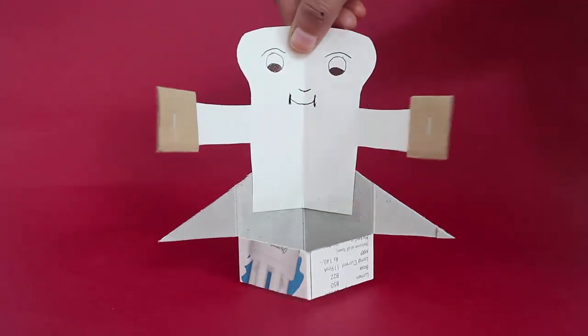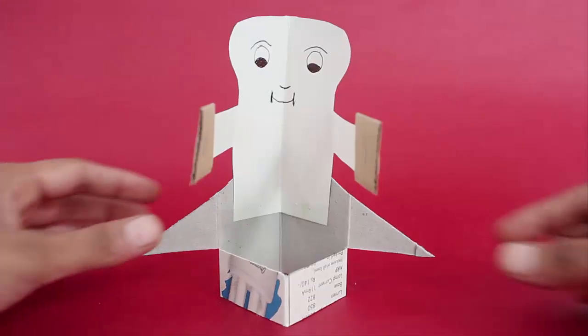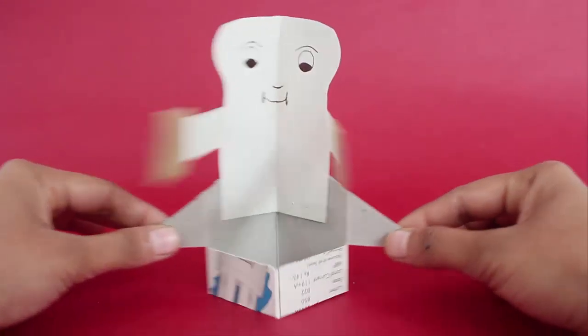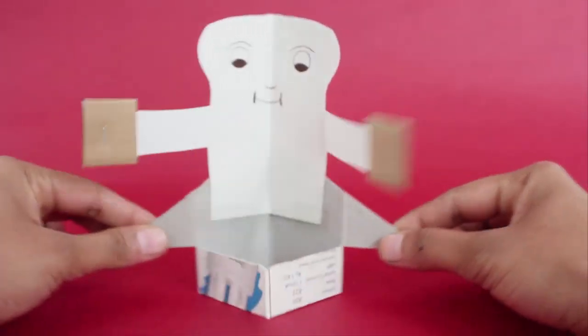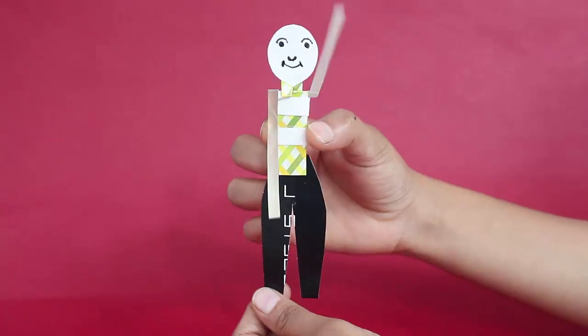There is a diamond below and if you hold both the triangular tabs and push and pull them, the puppet seems to be clapping merrily. It is a simple toy to make.